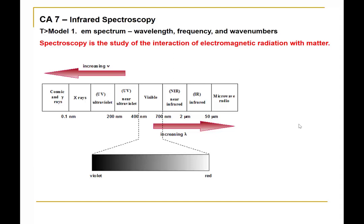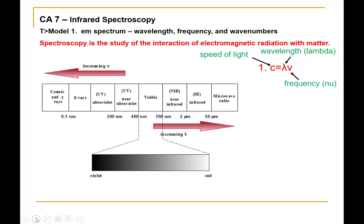Let's review the properties of light and some of the equations we use to describe it. An important equation tells us that the speed of light is exactly equal to the wavelength — represented by lambda — times the frequency — represented by nu. This simple equation shows that wavelength and frequency are inversely proportional: if frequency goes up by a certain factor, the wavelength will go down by that same factor.